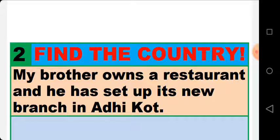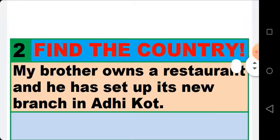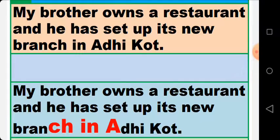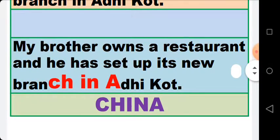Activity number two. Read the sentence carefully and find the name of the country. You must stop the video so that you can pay full attention to the sentence. The last two letters of the word 'branch', then the two letters of the word 'in', and the first letter of the word 'adhi' give us China. The name of the country is China.